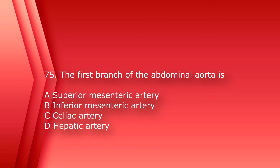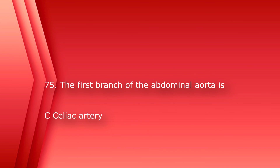Number 75: The first branch of the abdominal aorta is: A) superior mesenteric artery, B) inferior mesenteric artery, C) celiac artery, or D) hepatic artery. The answer is C, celiac artery. This concludes the third set of questions — stay tuned for the next set.